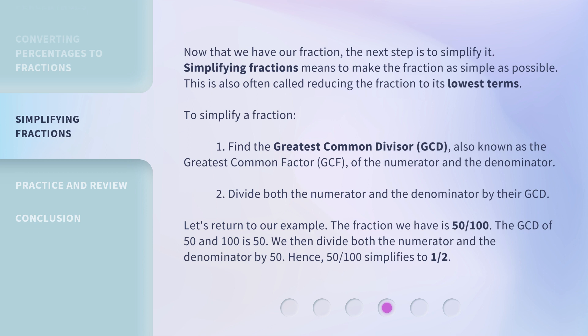2. Divide both the numerator and the denominator by their GCD. Let's return to our example. The fraction we have is 50/100. The GCD of 50 and 100 is 50. We then divide both the numerator and the denominator by 50. Hence, 50/100 simplifies to 1/2.